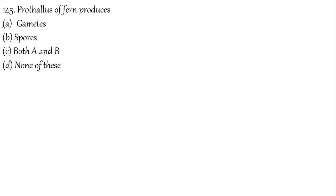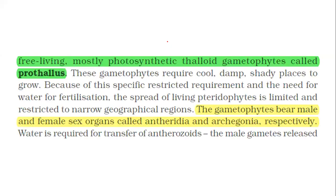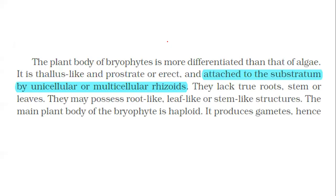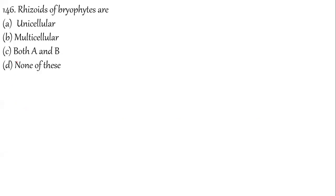Question 145: Prothallus of ferns produces gametes. Prothallus in ferns produces gametes — gametophyte called prothallus. Question 146: Rhizoids of bryophytes are — the very first sentence in NCERT says 'unicellular or multicellular rhizoids.' So the correct answer is both A and B — they can be either unicellular or multicellular.